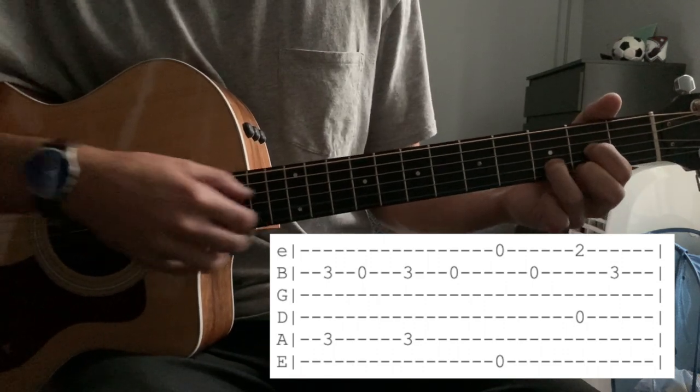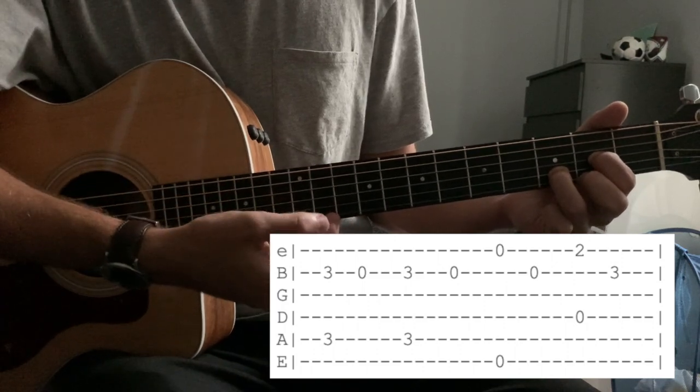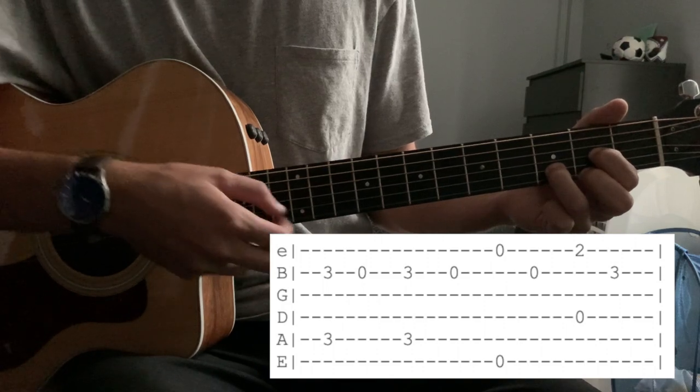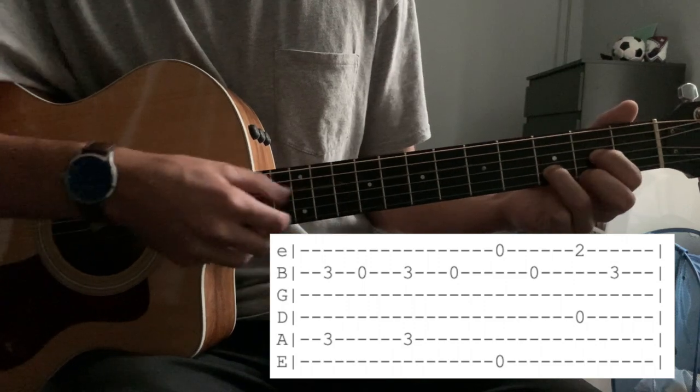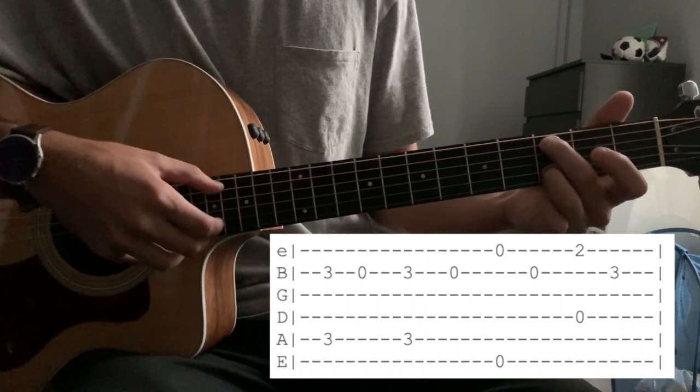And next we're going to go to a D chord shape, and we're going to pluck our open D string, and we're going to pluck the high E. And then we're going to pluck our B string, but now the ring finger is back to make that a D note. Okay, so let's put all that together. So far we have this.